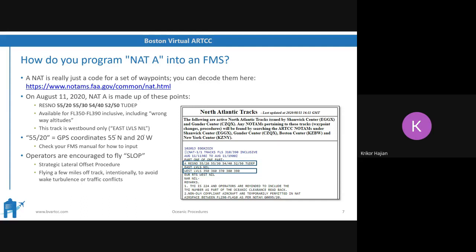Regarding track timing: tracks change at 0 Zulu and 12 Zulu. From 0 to 12 Zulu, there are normally several eastbound tracks but maybe only one westbound. From 12 Zulu back around, they publish more westbound and only one eastbound. On VATSIM, it's generally accepted as long as you're flying one of the current tracks. If there's confusion, the controller may have you clarify all the waypoints.